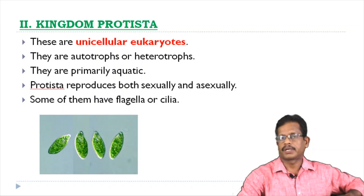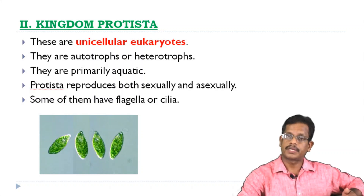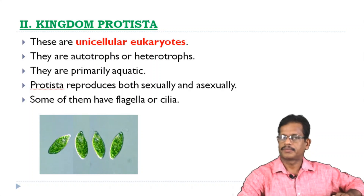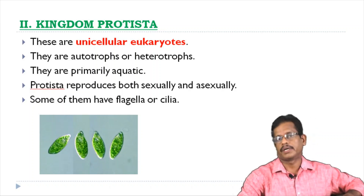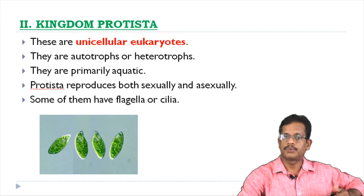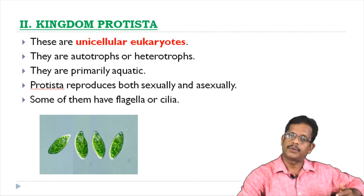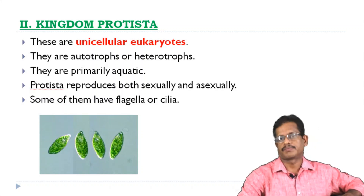Eukaryotic organisms. These are unicellular organisms. Protist is unicellular eukaryotic organisms.